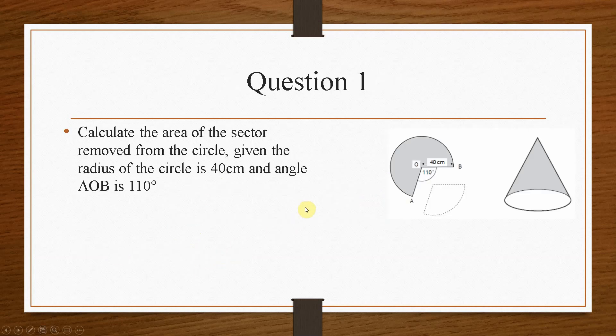So if we take a look at question one, it says calculate the area of the sector removed from the circle, given the radius of the circle is 40 centimeters and the angle AOB is 110.